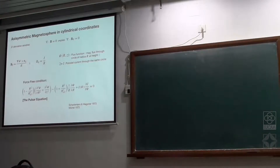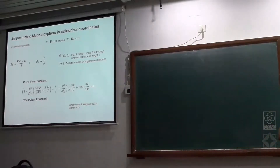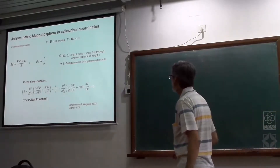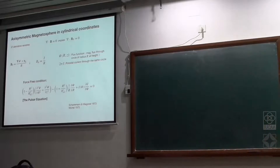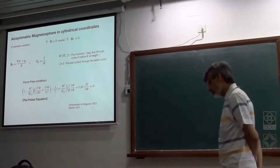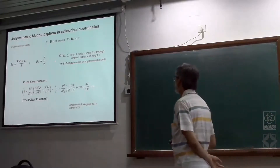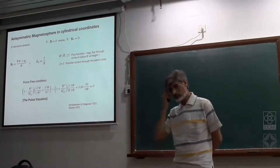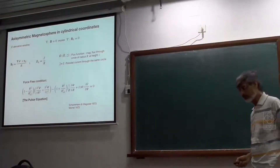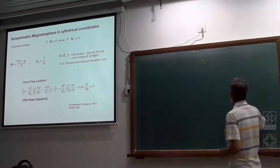An axisymmetric magnetic field can be uniquely described by two quantities known as the flux function ψ and the current function. Once these two are specified, all components of an axisymmetric magnetic field can be fully described in terms of them. In cylindrical coordinates, you have r, φ, z coordinate systems.